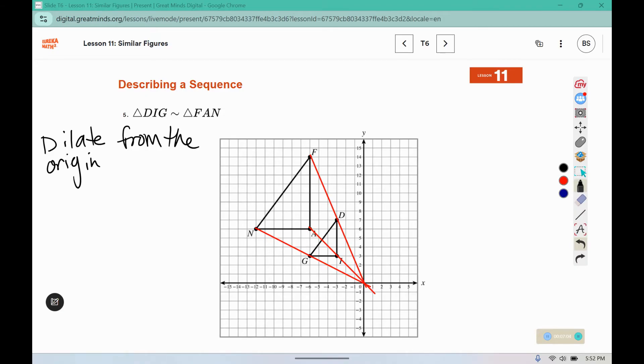And we do need to determine a scale factor. So from G to I, that was 3, and from N to A, that's a distance of 1, 2, 3, 4, 5, 6. So using a scale factor of 2, because 6 divided by 3 would give us 2.